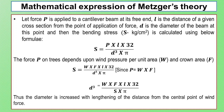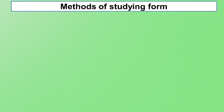It is calculated by the formula: S equals P times L times 32, divided by D cubed times pi. The force P on trees depends upon wind pressure per unit area (w) and crown area (f), so P equals w times f. Substituting: S equals w times f times L times 32, divided by D cubed times pi. Therefore D cubed equals w times f times L times 32, divided by S times pi.